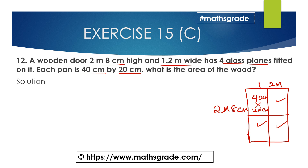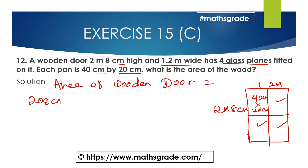So, what is the area of the wood? First, find out the area of the wooden door, then we need to find out the area of the glass panes. Area of the wooden door: the height is 2 meters 8 centimeters, which is 208 centimeters, and the width is 1.2 meters, which is 120 centimeters.